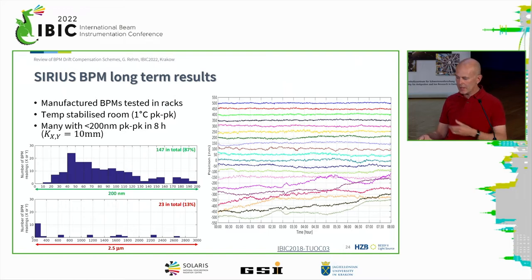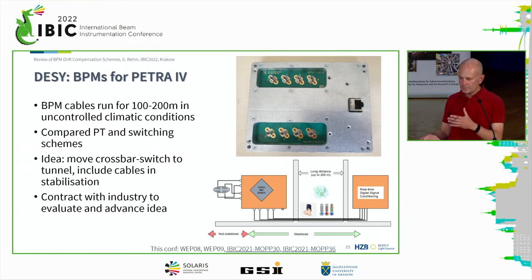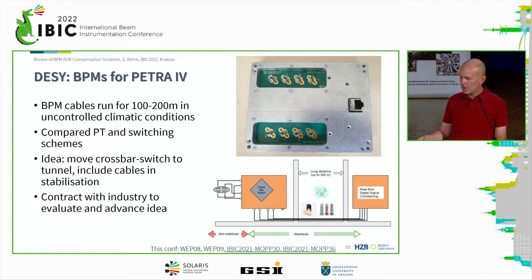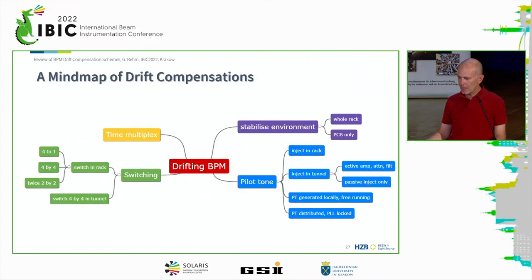The final one I'm going to talk about is DESY, which is looking at BPMs for Petra 4. That's a special project because it will have very long cable runs, so control of cables was mandatory. They previously compared pilot tone and switching and came to the conclusion that the switching concept better suits their needs. So together with industry they developed the concept of moving the crossbar switch from the rack area towards the tunnel. The results they get with that are very excellent — there's still a small slope visible over 10 or 100 hours, but the specifications of 150 and 300 nanometers peak to peak are well within the demanded specification.